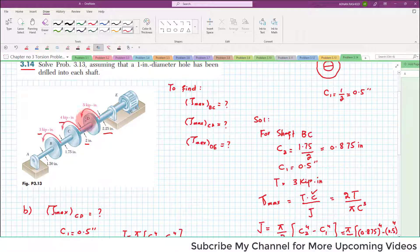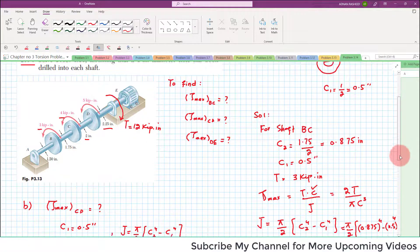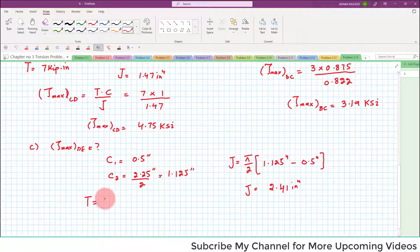Now net torque acting on shaft DE is equal to 3 plus 4 plus 5. So if you take the free body diagram, so net torque on this shaft is 12 because the motor is also exerting an opposite torque of 12 kips into inch. So net torque is 12 kips into inch.